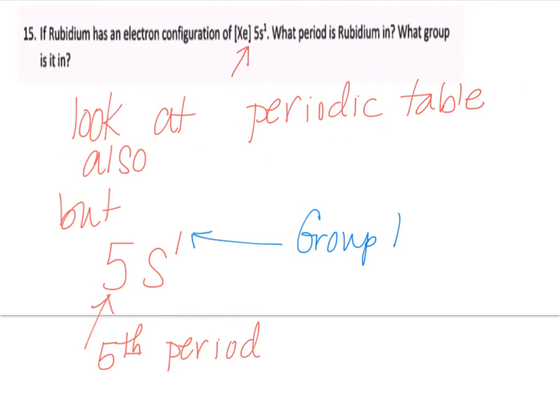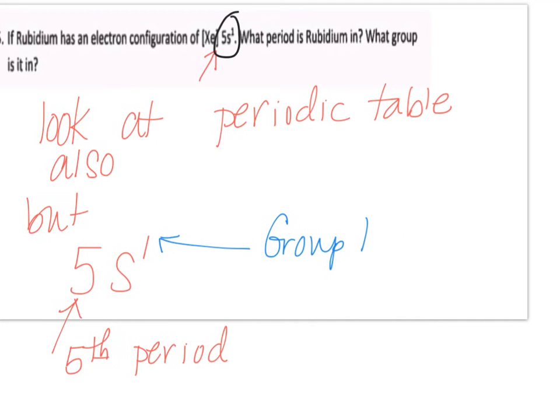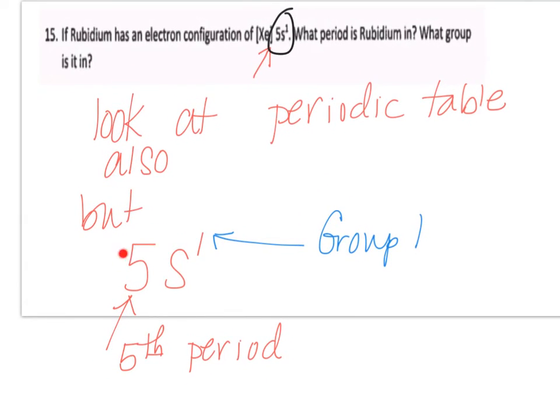Number 5 wants to know if rubidium has the electron configuration of xenon 5s1, what period is rubidium in and what group is it in? So what this is asking you is you can use the electron configuration right here to figure that out. Obviously you can just look at the periodic table and say find rubidium, there it is. But by this 5s right here, we can see that this is in the fifth period. So we know that we can go find that in the fifth period. S1, anything that's in S1 is going to end up being in group 1. So if you had to figure that out without the periodic table, that is how you could do that using that configuration. But on the test, quite honestly, just go look it up. That makes it a lot easier.